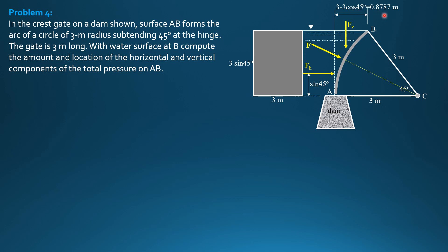So 3 minus 3 cosine of 45 is 0.8787. Then, let's call that X sub A because we specified the line of action of F_H from A. It's already specified sine of 45 or 0.7071 X_A. So the moment arm of F_V from C is 3 minus X_A. So F_H is specific weight of water times H, which is 3 sine 45 over 2. And the area is 3 times 3 sine 45.